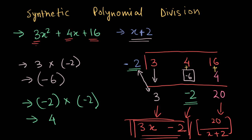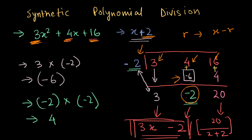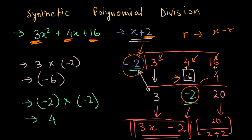Let me recap using a different color. You take the coefficients and place them here, take your new divisor in the form of r — so x plus 2 becomes minus 2. Bring down the first number, 3, multiply with the new divisor, place the result up here, then add. That gives minus 2. Repeat: multiply, place up here, add, and you get your final numbers — 3x, minus 2, and the remainder.